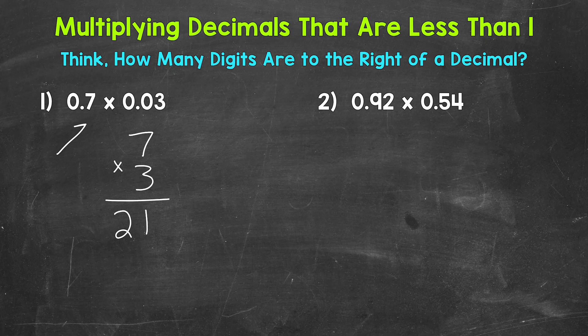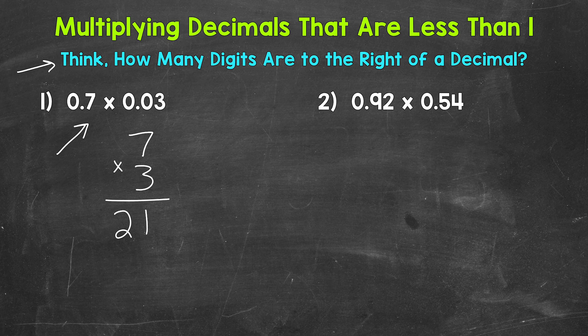Now the answer to 7 tenths times 3 hundredths isn't 21. We need to still place our decimal in that answer. So we need to think, how many digits are to the right of a decimal in the original problem?